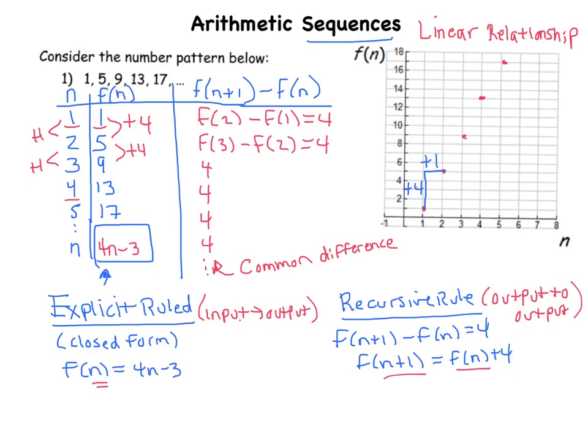Now the one thing to keep in mind about a recursive rule is that this is the pattern between outputs, but you do have to specify where to start. You have to specify what the first output is going to be, and in our case the first output is a 1. So a recursive rule is not just the pattern from output to output, it's also where to start, and that can have an effect on what your general sequence is going to look like.